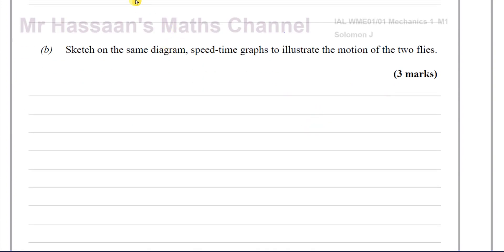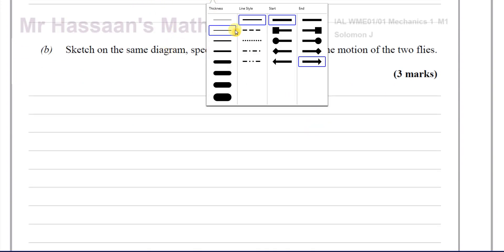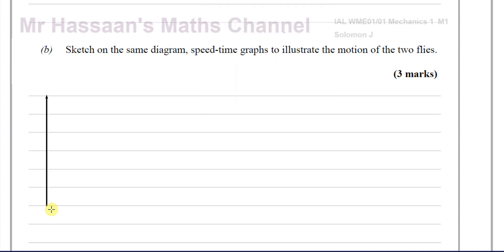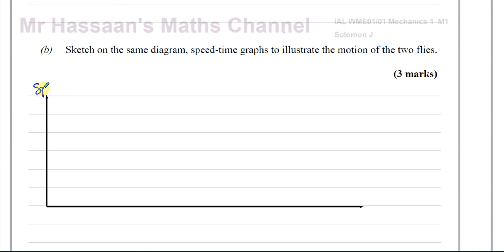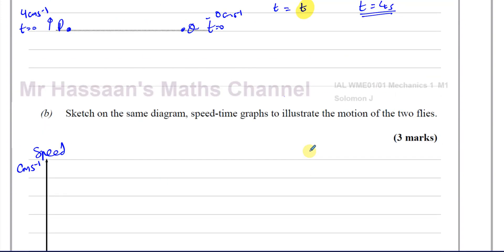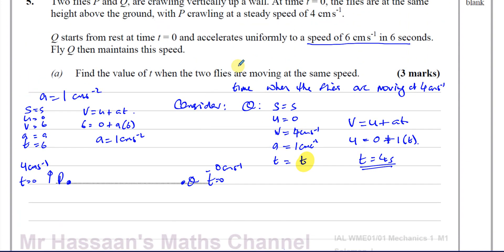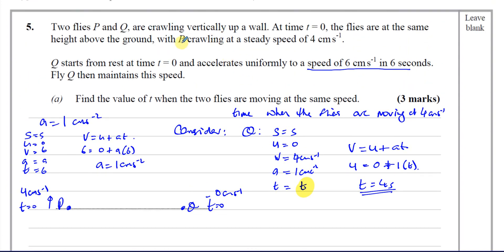Now for part B, it says sketch on the same diagram speed-time graphs to illustrate the motion of the two flies. Let's set up our axes: the vertical axis represents speed and the horizontal axis represents time. The speed is in centimetres per second and the time is in seconds.